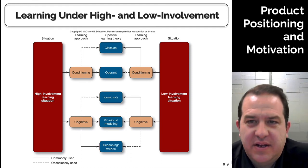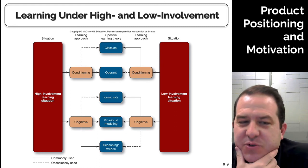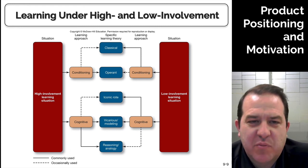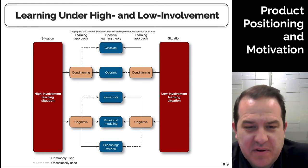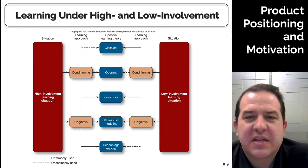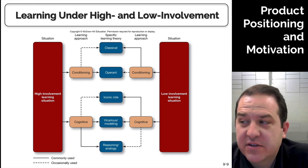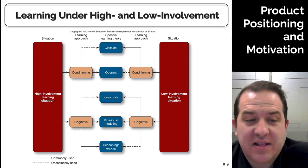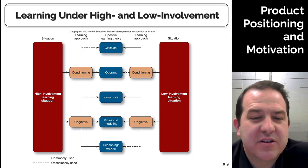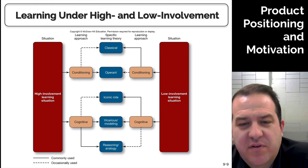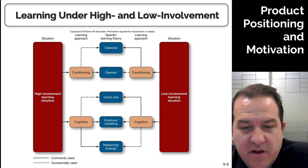We learn in high and low involvement. In a high involvement situation, we get conditioned and it goes into our cognitive brain. Our learning approach can be either conditioning or cognitive, and the same applies to low involvement. Typically, low involvement learning leads to classical conditioning. For high involvement cognitive learning, we use reasoning and analogy. For low involvement cognitive learning, it goes the iconic rote route and vicarious modeling. Let's look at the theories we need.